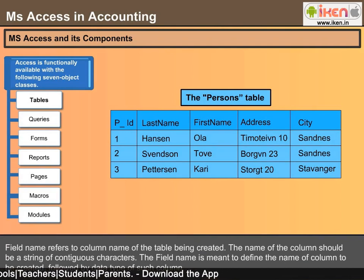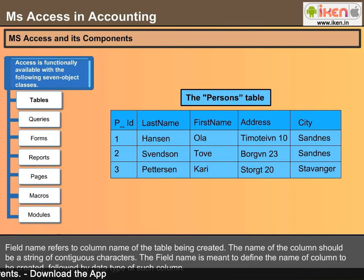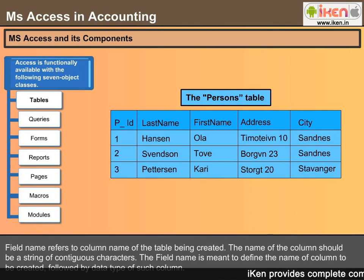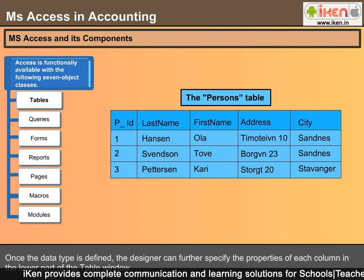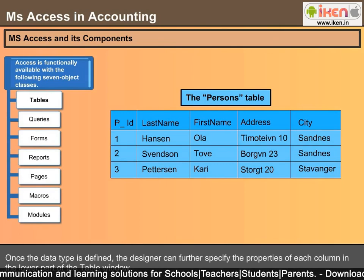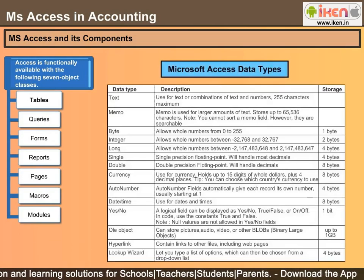Field name refers to the column name of the table being created. The name of the column should be a string of contiguous characters. The field name defines the name of the column to be created, followed by the data type of that column. Once the data type is defined, the designer can further specify the properties of each column in the lower part of the table window.